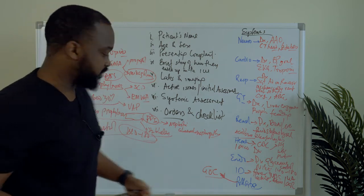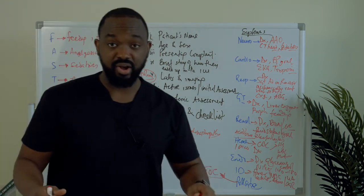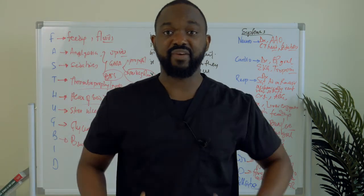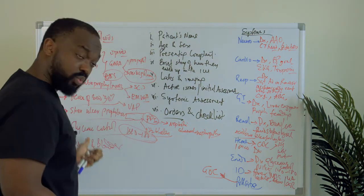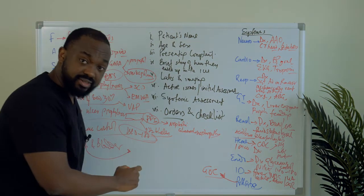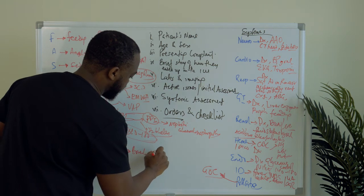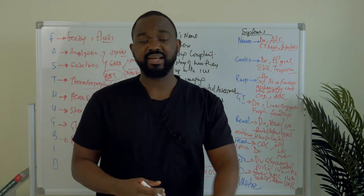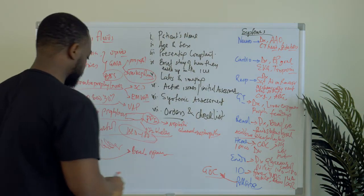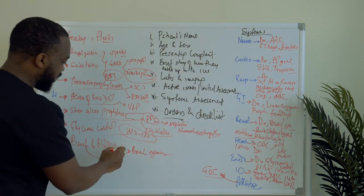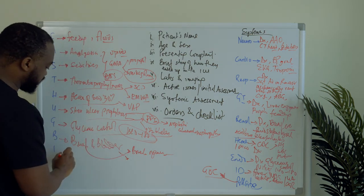B represents bowel and bladder. Are they making bowel movements? When patients can't empty their bowels, it affects the mechanics that allow proper ventilation, so you want to give them a bowel regimen — things like Senna, Senokot, Miralax, polyethylene glycol, and Colace. You can combine them to achieve what's needed. For bladder, make sure they're making urine; if not, you may need to place a catheter.